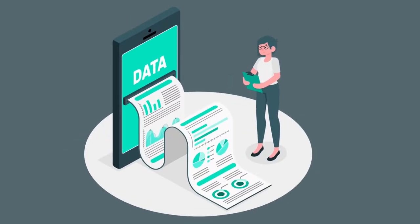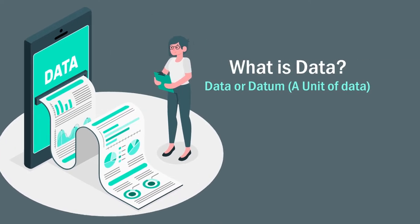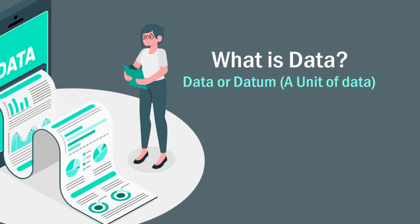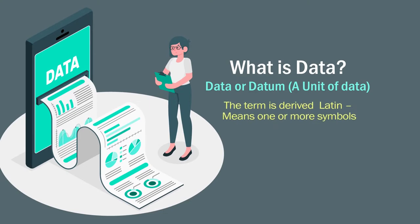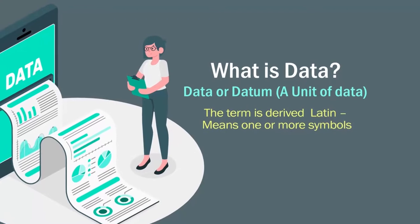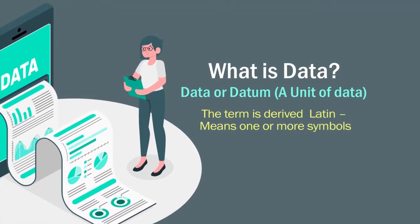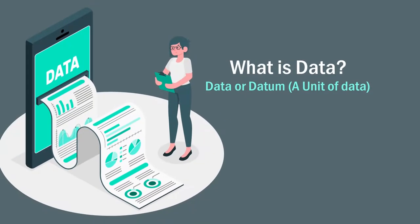To begin with, let us try to deal with what we call data. The word data — if it is singular it is called datum, which is a unit of data. This term has been derived and means one or more symbols, so data technically represents symbols. A data bit consists of a number of symbols.